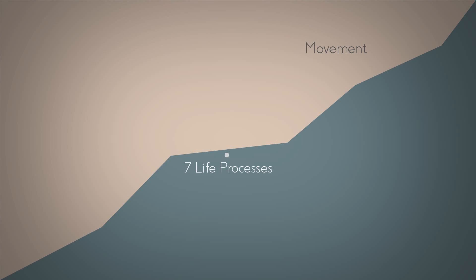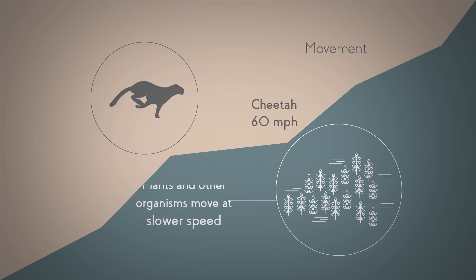The first is movement. Some organisms move very obviously, like a cheetah, the fastest animal on the planet, which can run at 60 miles per hour. Other organisms, like plants, move much more slowly, but all living things do move.